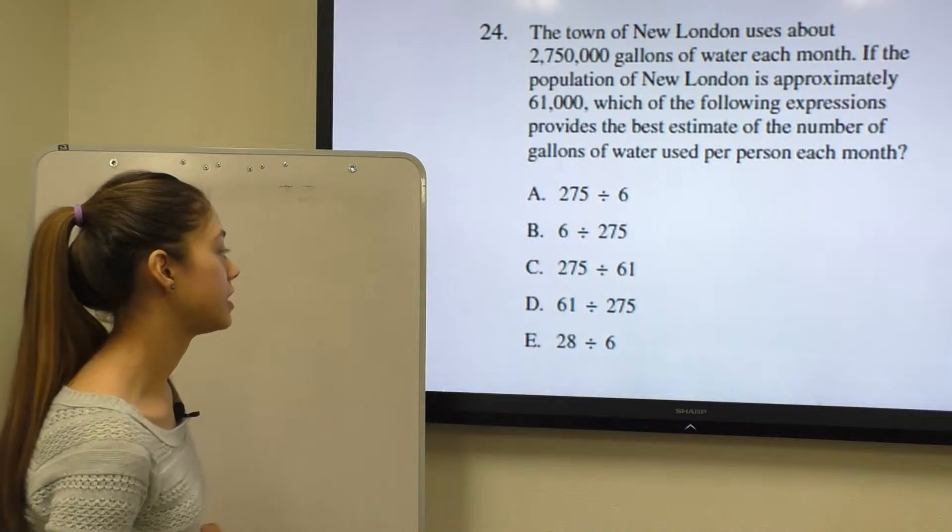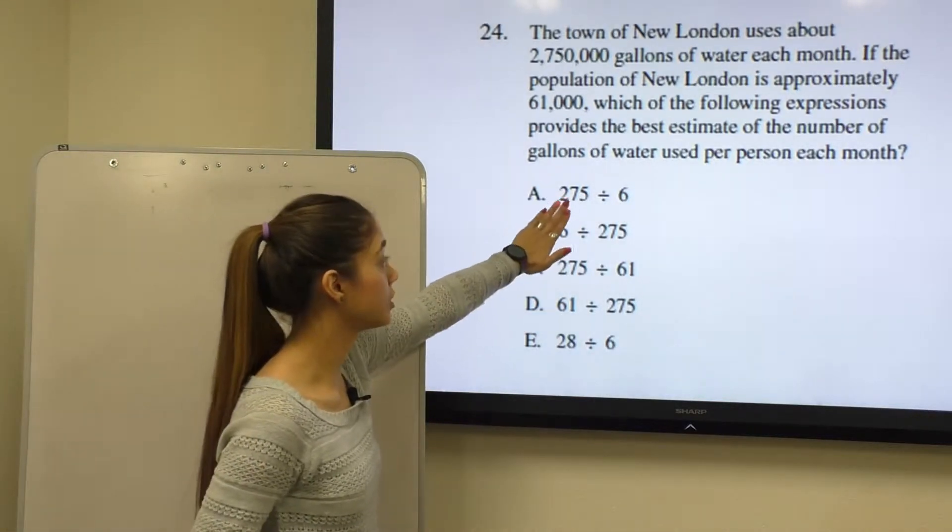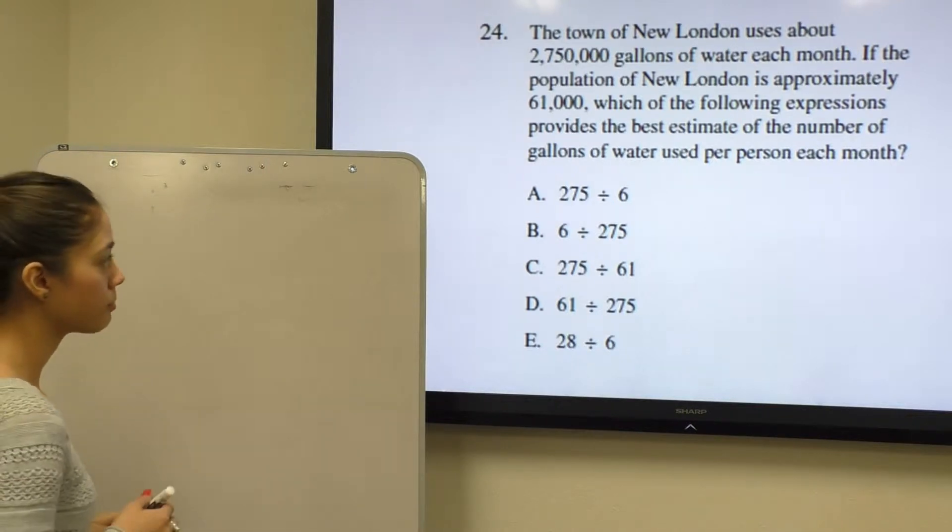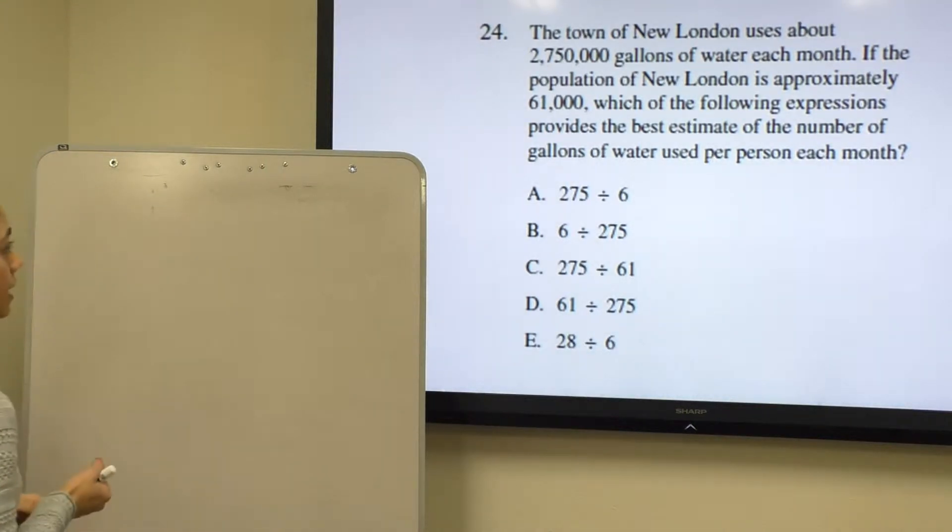So the first thing we have to notice here is that our answers have gotten rid of all the zeros, meaning they divided both amounts by a large number.